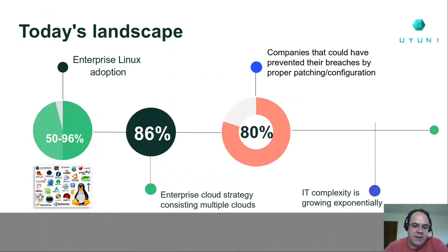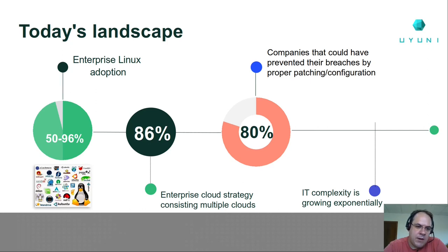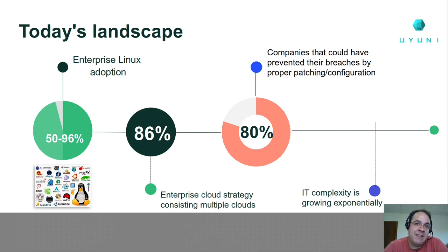Let's start with today's landscape — what we see in enterprise IT. Linux is present in almost 100% of enterprises. In some places it's 50%, in some places it's 95% like the clouds. Most enterprise users are not only addressing one cloud but multiple clouds, and many users have experienced security breaches, most of the times because they haven't patched or configured properly their systems. The complexity of IT is not diminishing but on the contrary, every day it's increasing.